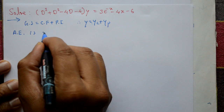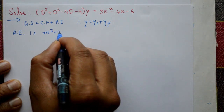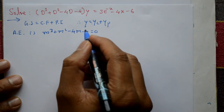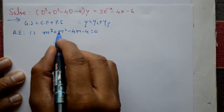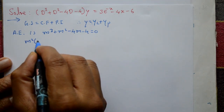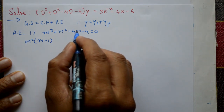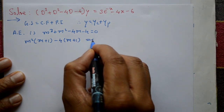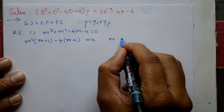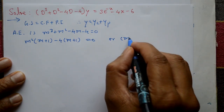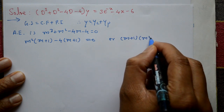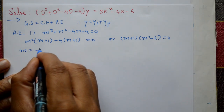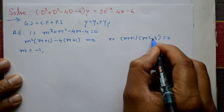The auxiliary equation is m³ + m² - 4m - 4 = 0. In the first two terms, m² is common, giving m²(m + 1). In the last terms, -4 is common, giving -4(m + 1). So (m + 1)(m² - 4) = 0, and roots are m = -1 and m = ±2.